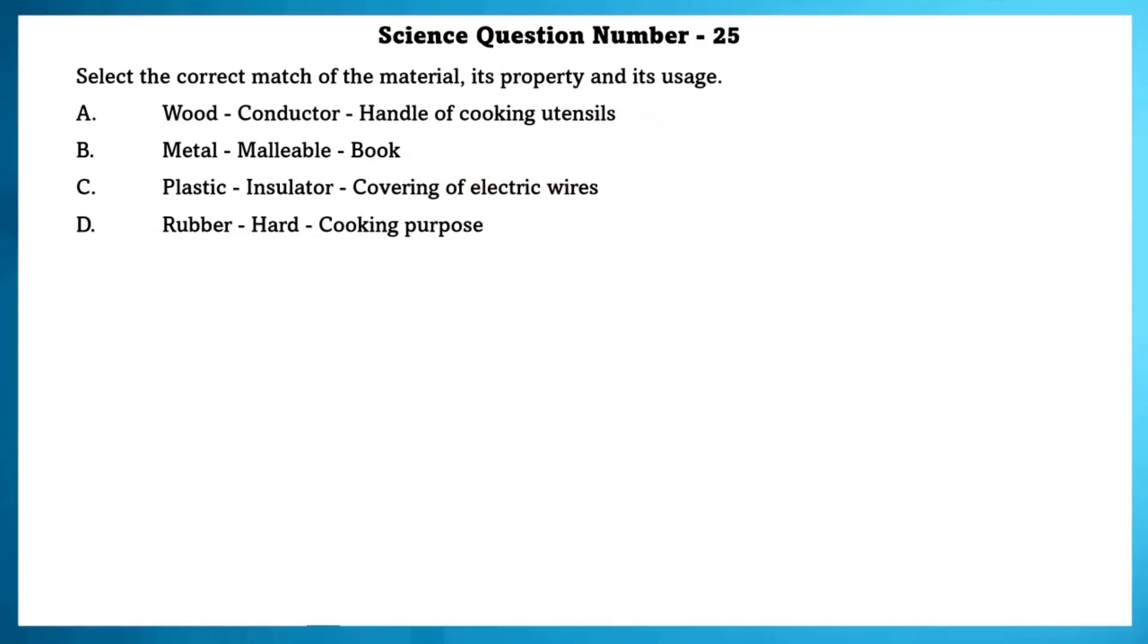Science question number 25. Select the correct match of material, its property and its usage. A cannot be the option because wood is not a conductor but an insulator. B cannot be the option because book is not malleable. C can be the option. D cannot be because rubber is not used for cooking purposes. So, the answer is C.